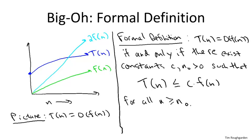So the role of these two constants is to quantify what we mean by a constant multiple and what we mean by sufficiently large in the English definition. C obviously quantifies the constant multiple of F of n, and n naught is quantifying sufficiently large. That's the threshold beyond which we insist that C times F of n is an upper bound on T of n.